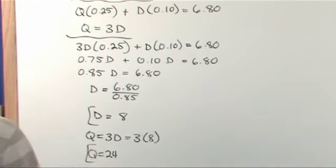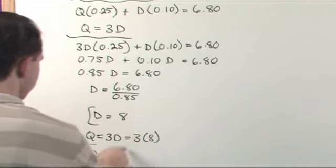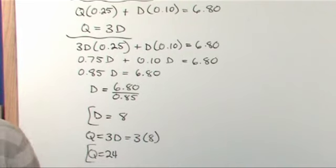So it's easy to check this. First thing you need to do is say you have 3 times as many quarters as dimes. 8 times 3 is 24. Yes you do. You have 3 times as many quarters as you do dimes.